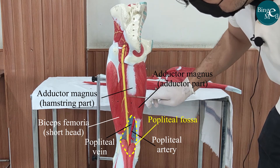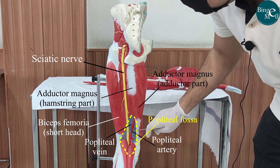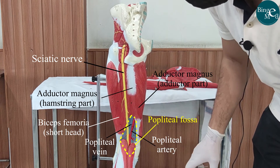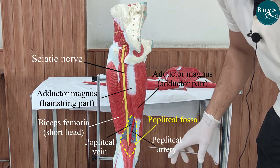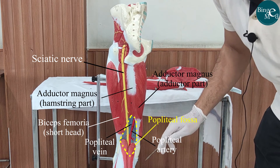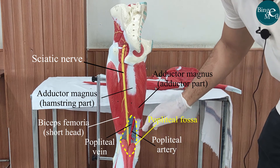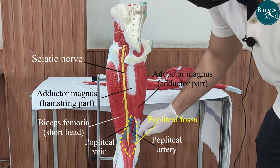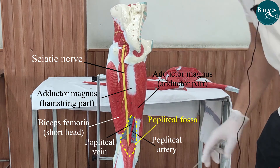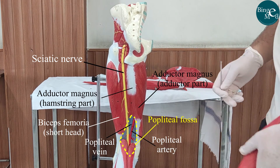This is the sciatic nerve, which divides in the lower part of the posterior one-third of the thigh into the common peroneal nerve and tibial nerve. This is the tibial nerve and this is the common peroneal nerve.